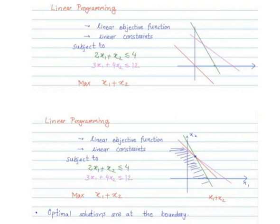We define what is a linear programming problem first. A linear programming problem is a minimization or maximization problem where we are asked to minimize or maximize a given linear function subject to one or more linear inequality constraints. The linear function is also called the objective function.